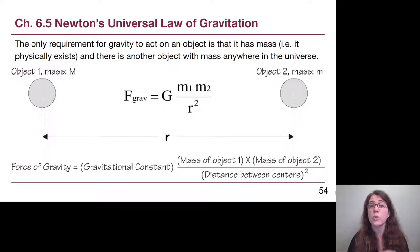So, the only requirement for gravity to act on an object is that that object has to have mass, and there must be some other mass in the universe. Right now, there is a force of gravity between you, the person watching, and me, the person talking, but we have relatively small masses, our distance is probably quite large, and that g value is 10 to the minus 11. So, it's a very, very small force that we don't even notice, but it is there.